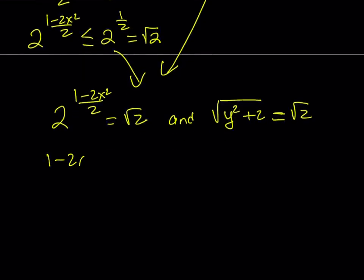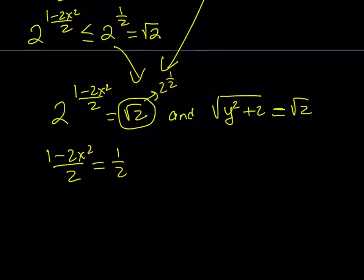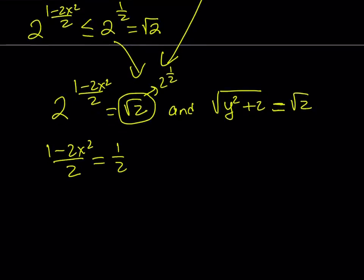From here, we get that 1 minus 2x squared over 2 is equal to 1 half, because remember, square root of 2 could be written as 2 to the power 1 half. So, we can write it as an equation that way. Forget about the 2s. Forget about the 1s. This basically gives you x equals 0.